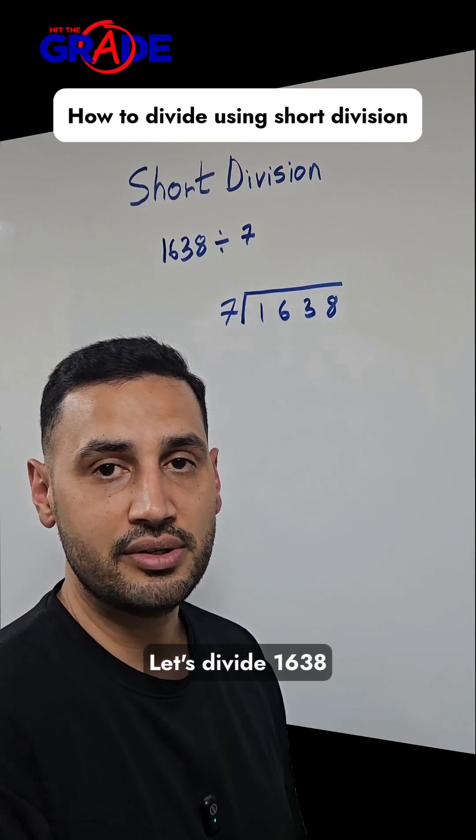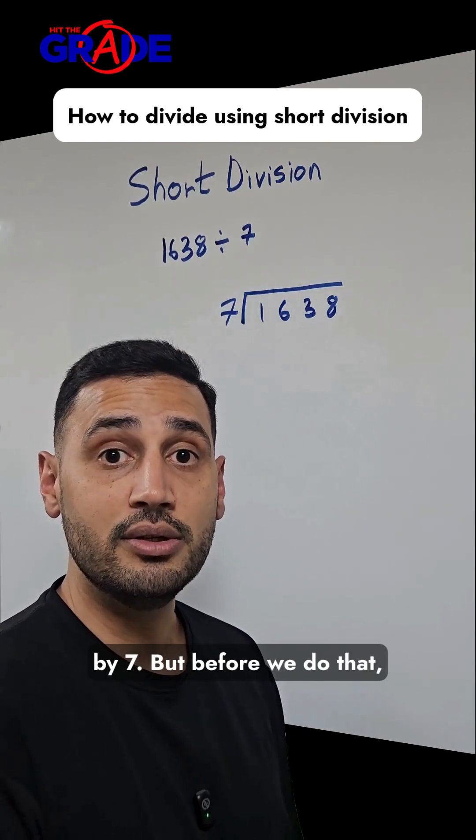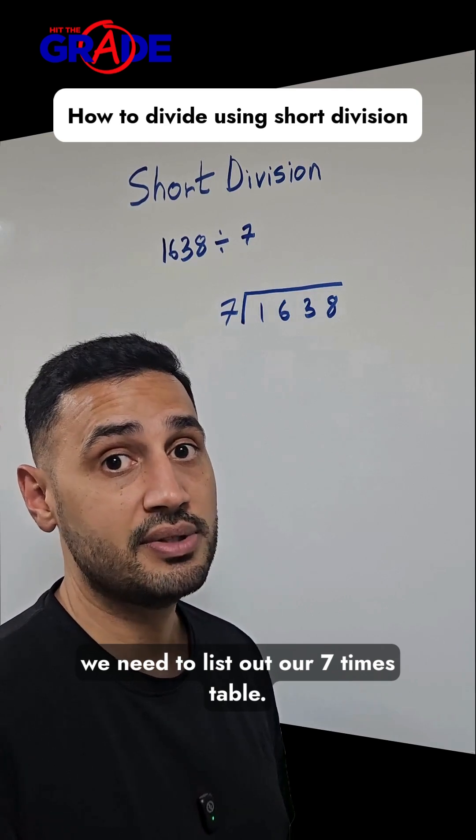Let's divide 1,638 by 7. But before we do that, we need to list out our 7 times table.